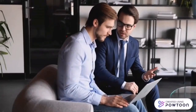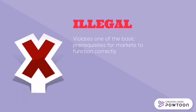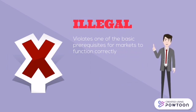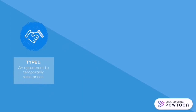Any arrangement that prevents price competition is illegal. Price fixing is illegal and immoral not because it affects customers, but because it violates one of the basic prerequisites for markets to function correctly. Conduct that allows a single seller or group of vendors to control the market goes against the principles of efficient marketplaces. There are four types of price fixing. The first is an agreement to temporarily raise prices — all competitors agree to a set level of price increases. Research from Cardozo Law Review (2012) found such agreements generate a 37% increase in prices.